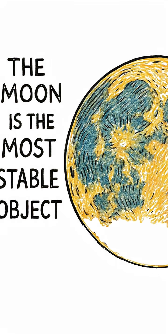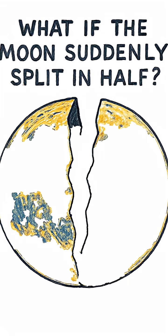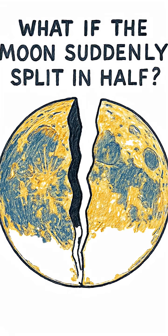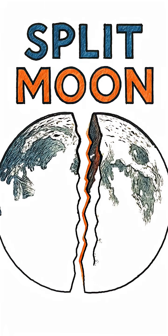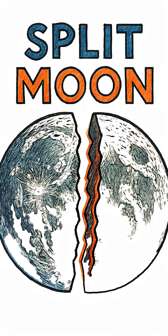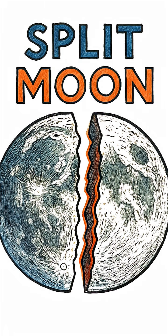The moon is the most stable object we know. So what happens if it suddenly splits in half? Not shattered, just a perfect, impossible crack, cutting it into two giant pieces.